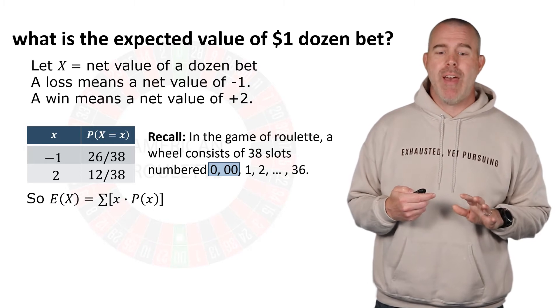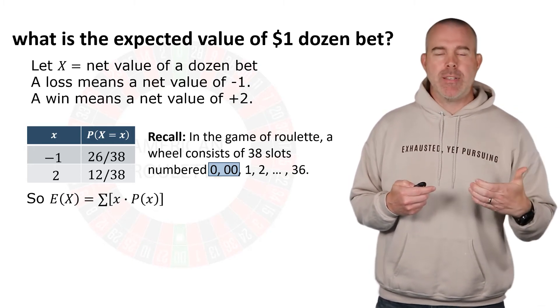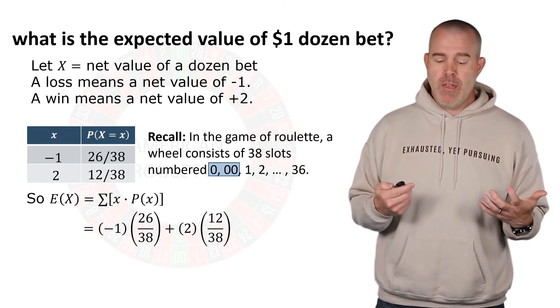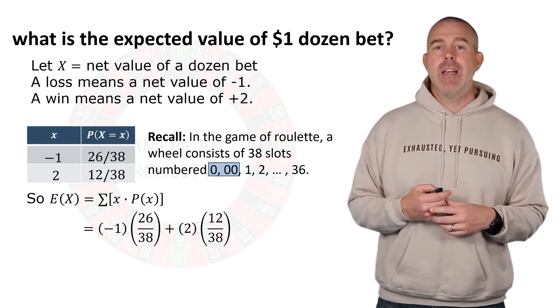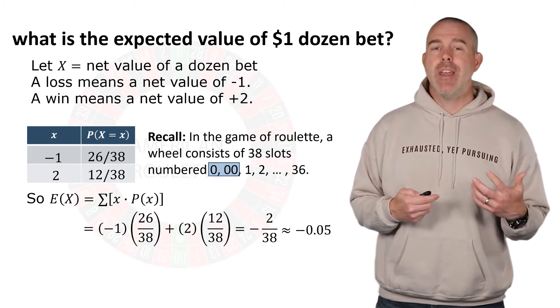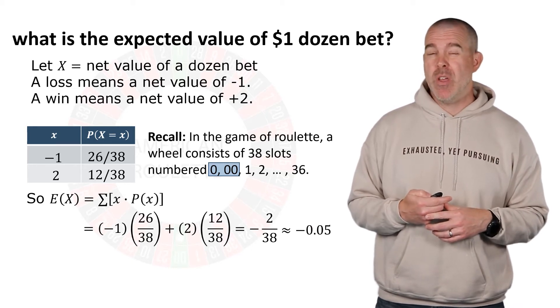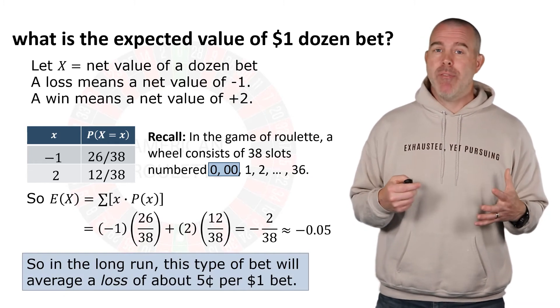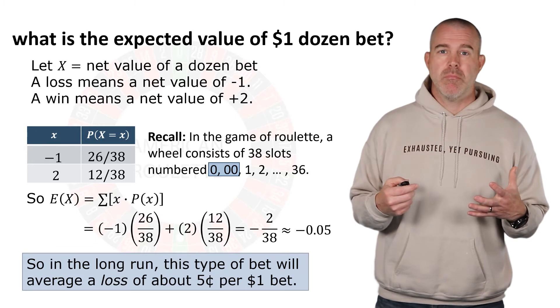The key here that makes this unfair is that extra zero and double zero, and we'll see how this works out in the expected value. The expected value is you sum the possible random variable values times their probability. Okay, well, we have negative one times 26 out of 38 and positive two times 12 out of 38. Multiply those together, negative two out of 38, we get negative 0.05. What this means is, on average, this type of bet is going to lose five cents on average.